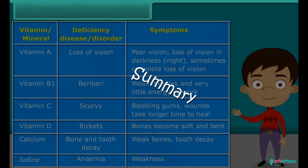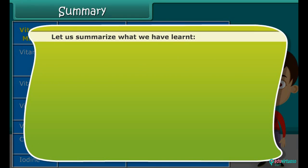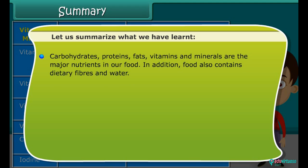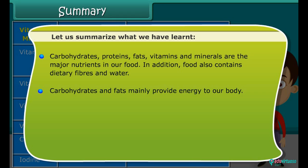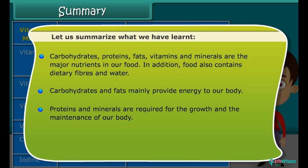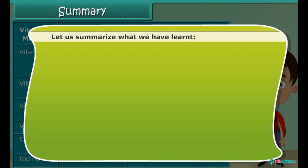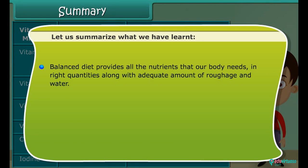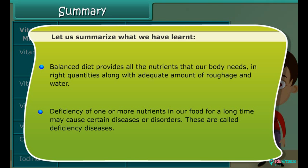Let us summarize what we have learned. Carbohydrates, proteins, fats, vitamins and minerals are the major nutrients in our food. In addition, food also contains dietary fibers and water. Carbohydrates and fats mainly provide energy to our body. Proteins and minerals are required for the growth and maintenance of our body. Vitamins help us in protecting our body against diseases. A balanced diet provides all the nutrients that our body needs in right quantities, along with adequate amounts of roughage and water. Deficiency in one or more nutrients in our food for a long time may cause certain diseases or disorders, called deficiency diseases.